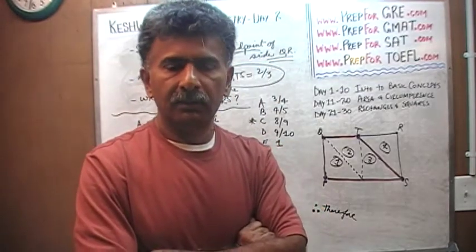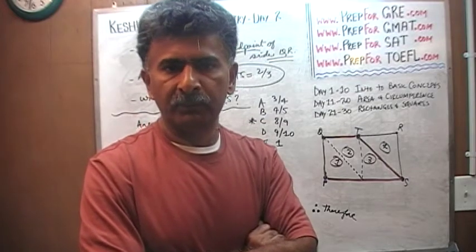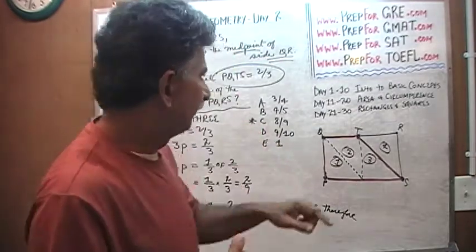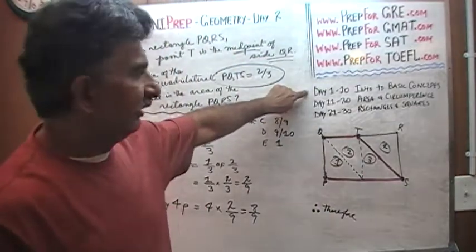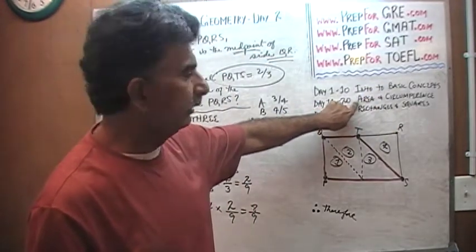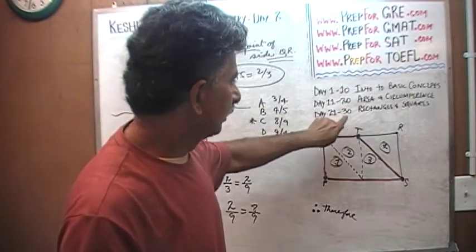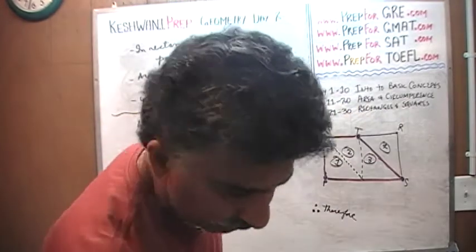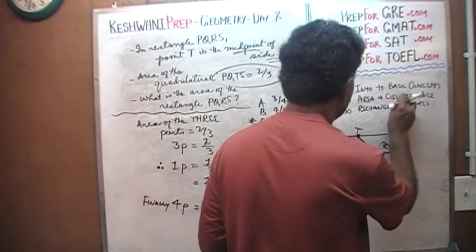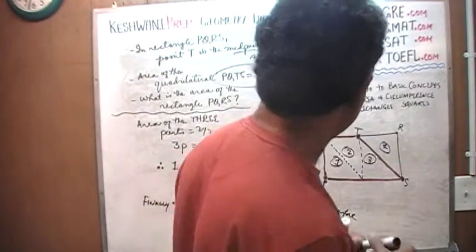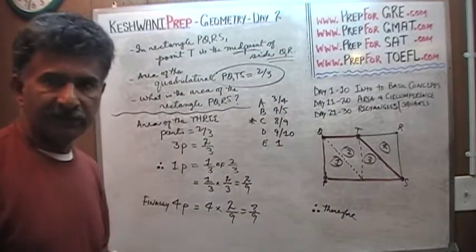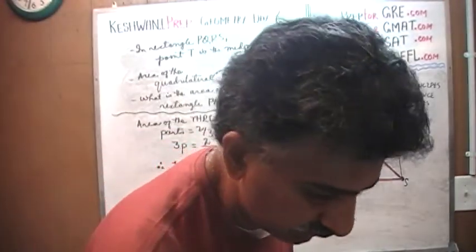So either way, we have 10 more days for the triangles, 10 days for the slope, and then finally, towards the very end, I will just mix everything up together and give you a few problems. We have done the basic concept that we want to cover, which is, we had the first 10 days when we did the introduction to the basic concept. Then we did the next 10 days, 11 through 20, we talked about the areas and circumference of the circles. Then 21 through 30, we are doing rectangles and the squares. The next 10 days, as I said, it's going to be either slope or the triangles, and another 10 days and so forth.